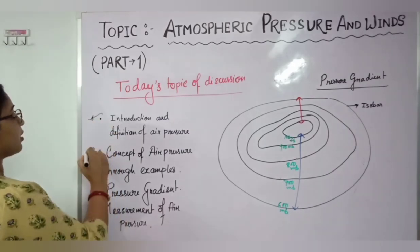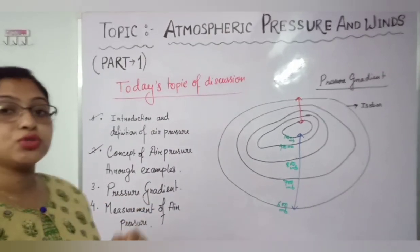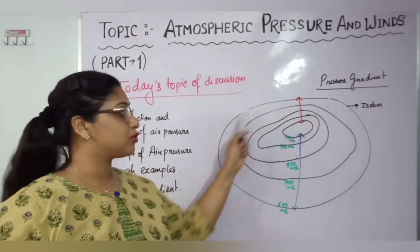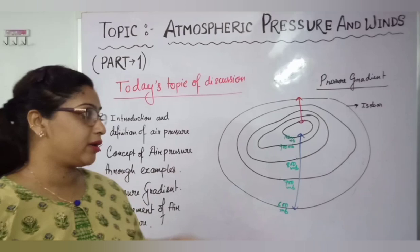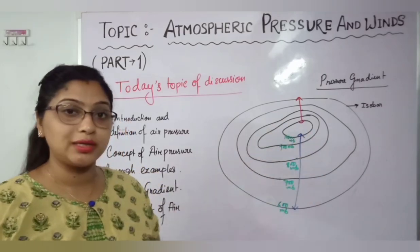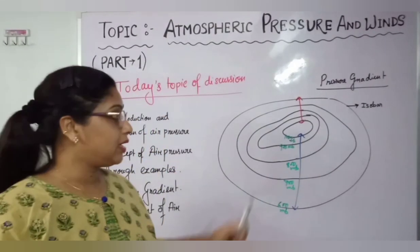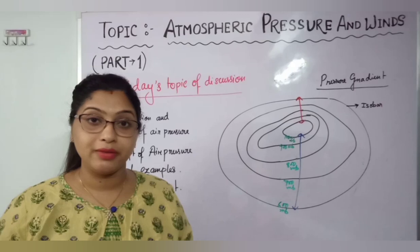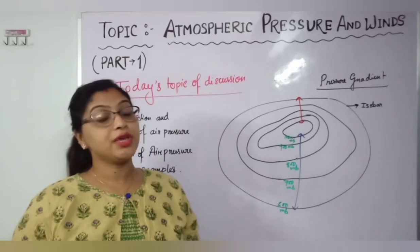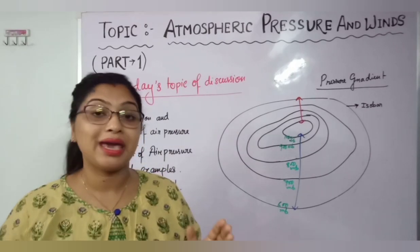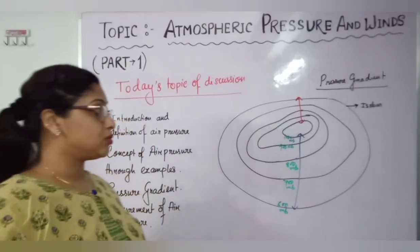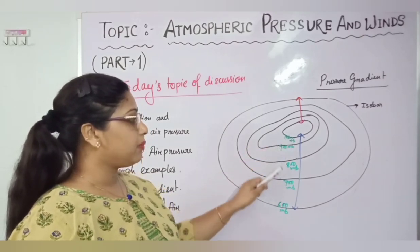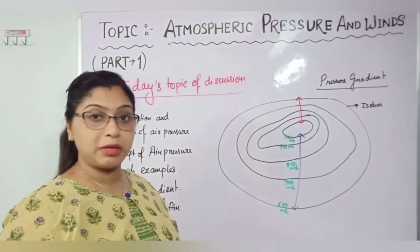Now we have covered two points; now we need to know about pressure gradients. To understand pressure gradient, first we need to know about isobars. I have drawn some circular or semi-circular shapes in the diagram. Isobars are imaginary lines which join the places having the same air pressure above sea level.